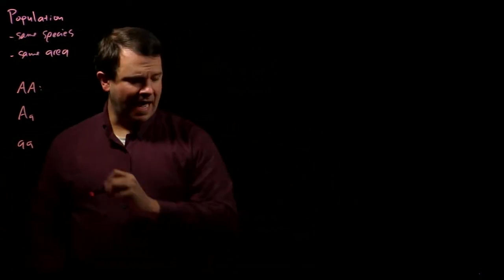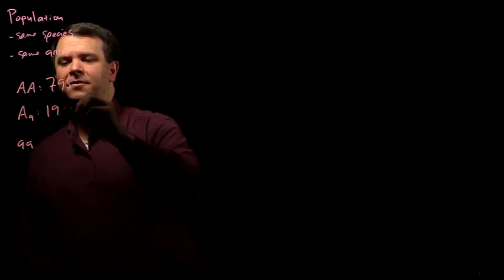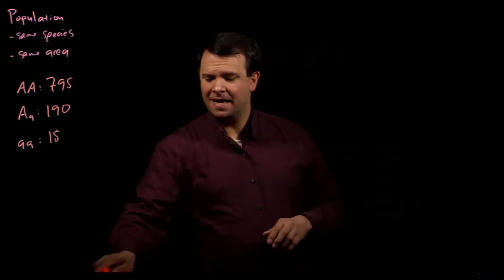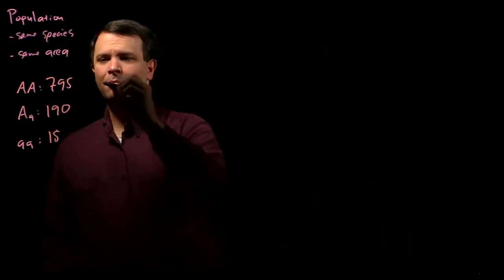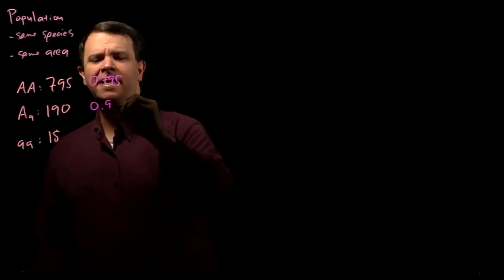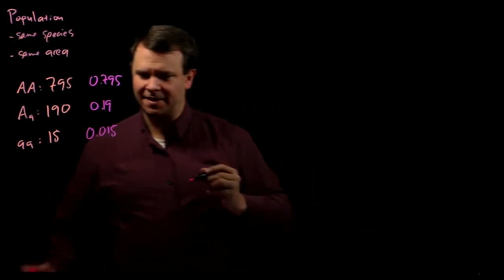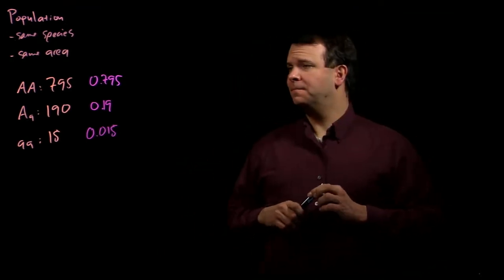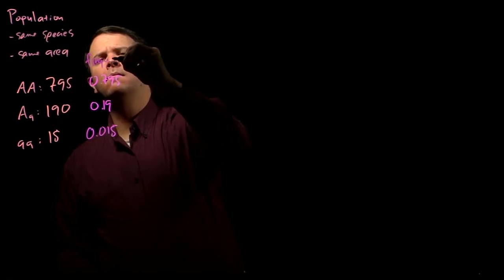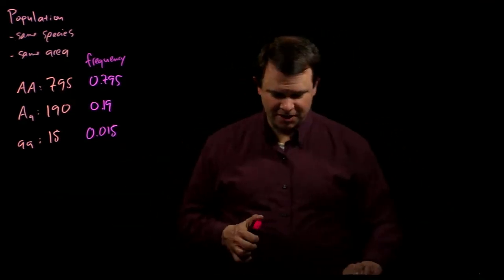For the homozygous big A, we see out of these thousand individuals, 795 of them have this genotype. We have 190 heterozygotes and we find just 15 homozygous little a. That is to say that in this population, 79.5% of the individuals are homozygous dominant, 19% are heterozygous, and just 1.5% are homozygous recessive. So we've gone from a count — how many individuals we have — to a frequency, the proportion of the population that has each of these genotypes.